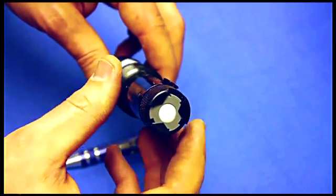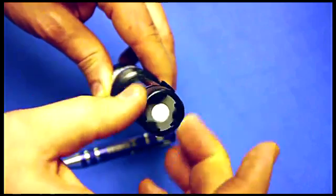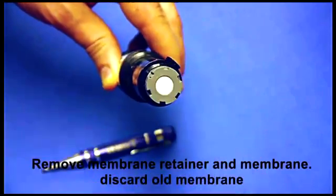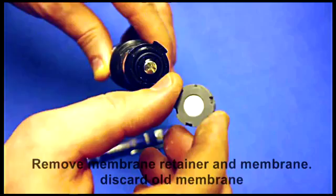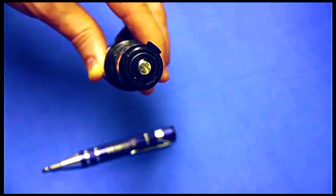So the first thing you want to do is remove the membrane assembly. First take off the membrane retainer, then you can disregard this membrane head and throw that away as it's been used.